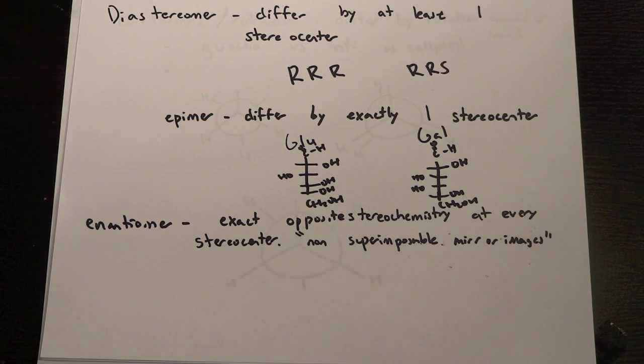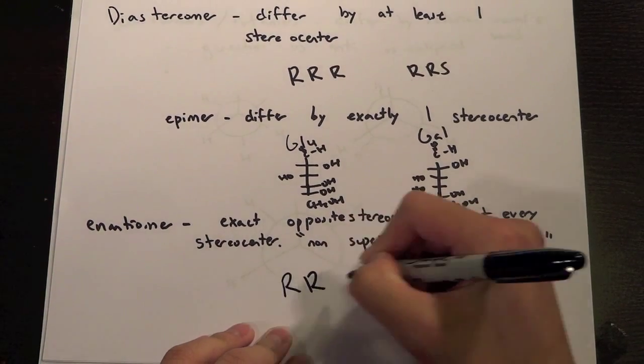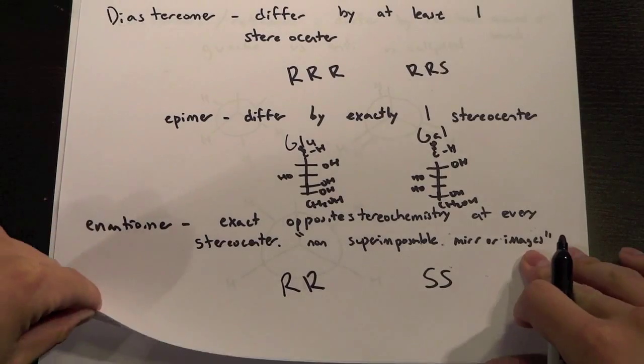And so enantiomers are something that have the exact opposite stereochemistry at every stereocenter and they're non-superimposable mirror images. So something like if it was RRSS, that would be an enantiomer.